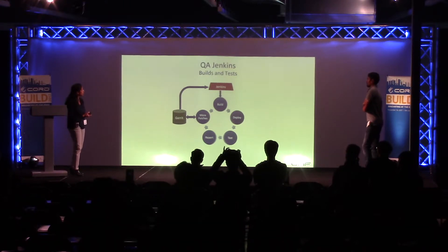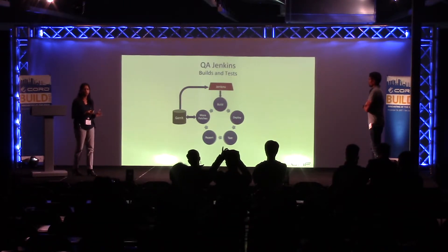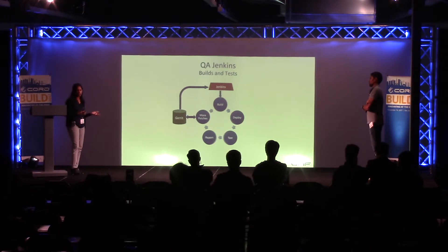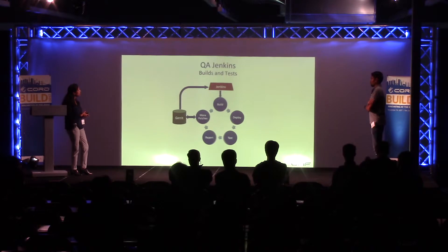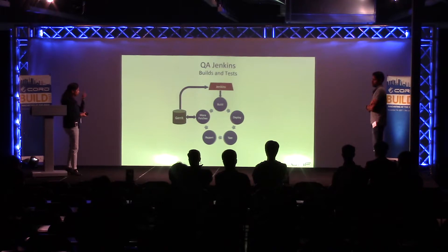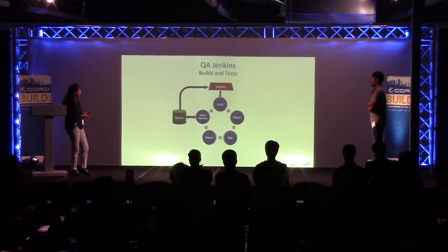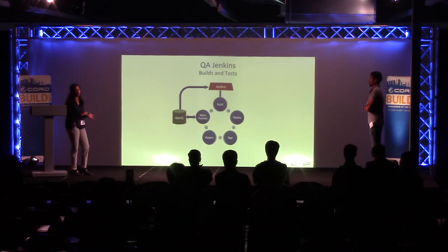For the QA Jenkins environment, we follow a standard procedure for running and managing tests. The cycle shown here is: build, deploy, test, report bugs, apply patches — and the cycle continues. Jenkins drives the entire build, deploy, and test pipeline.